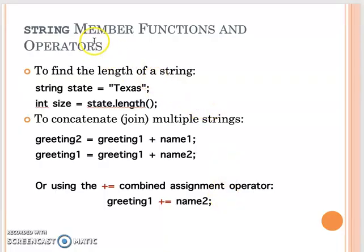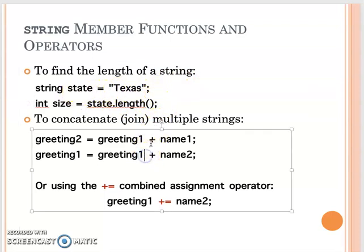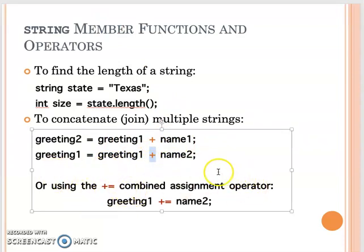At the end, I want to quickly talk about the string object. When you have a string, you can use the .length() function to know how many characters are in that string. Also, if you want to join multiple strings together, you can use the addition operator. So if you have string greeting1 and your name, you can add them together to create a combined string. You can also use the combined assignment operator to append to a string.